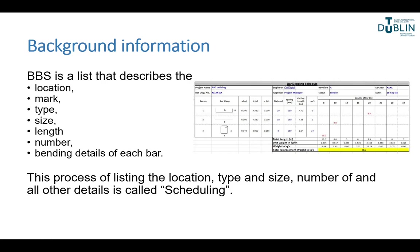In this video we're going to look at bar bending schedules. Bar scheduling is the operation of listing the location, bar mark, steel type and size, number of and bending details of each reinforcement bar. This could be in a beam or any type of concrete element — beam, floor, slab, wall, whatever.